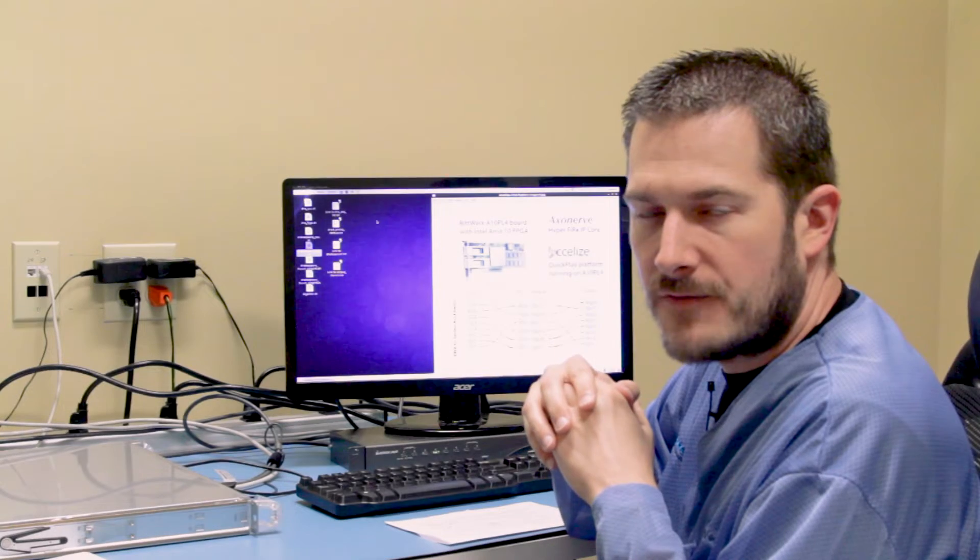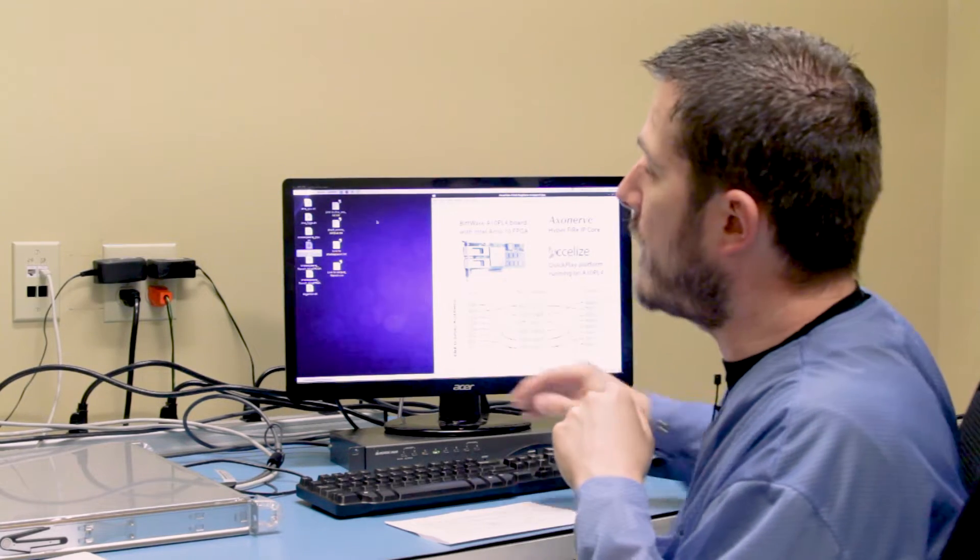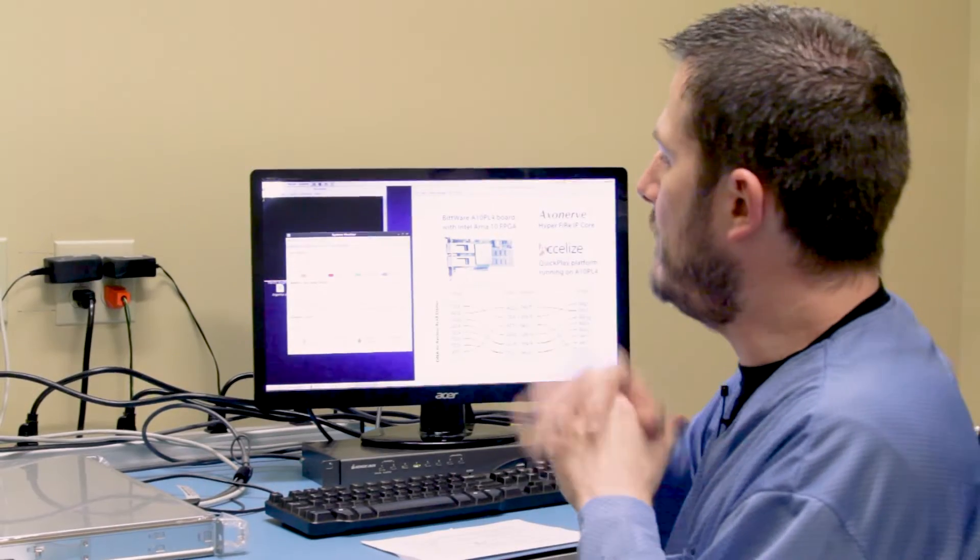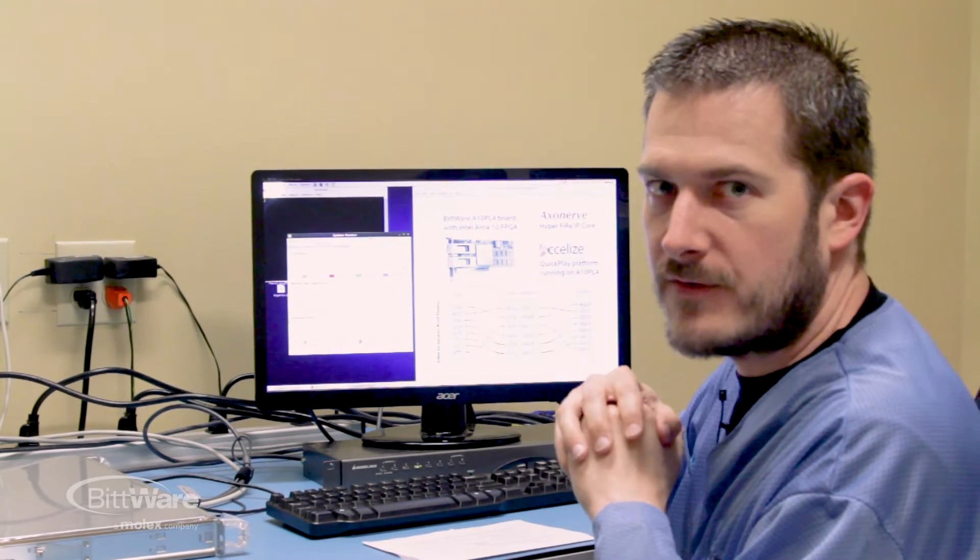So that was using 500 find-and-replace terms. Let's try 2,500. So it's taking the same 5 megabyte input, but now we're replacing 2,500 lines. So the CPU is started on that. And again, we're going to have to fast forward.